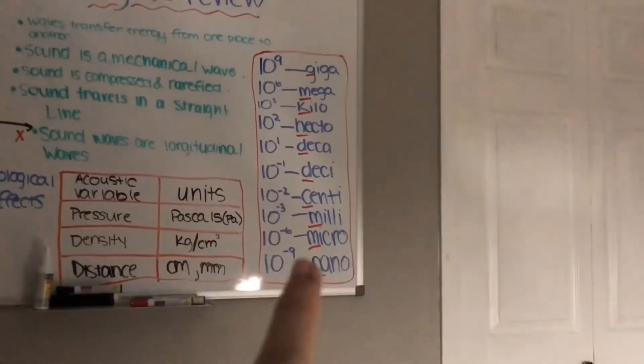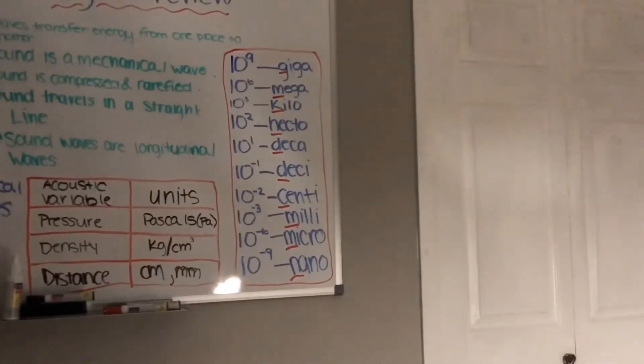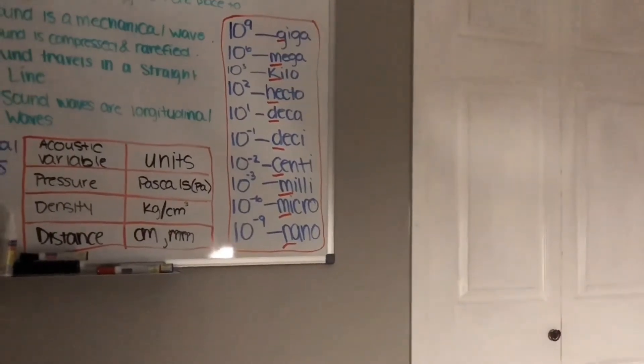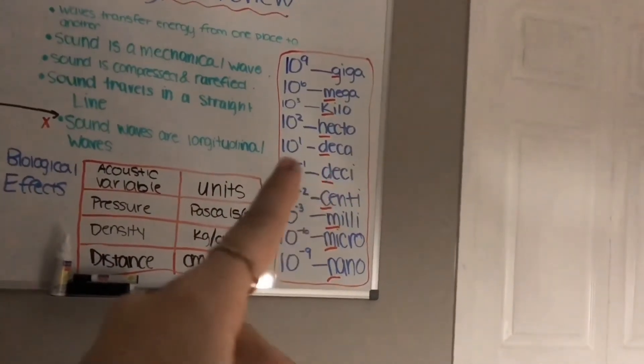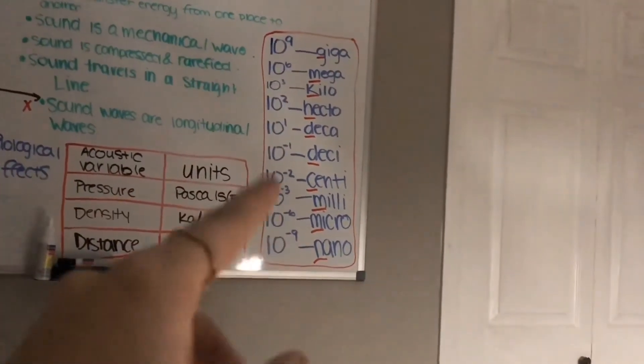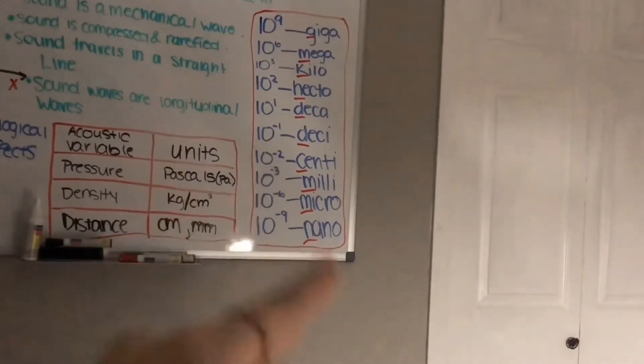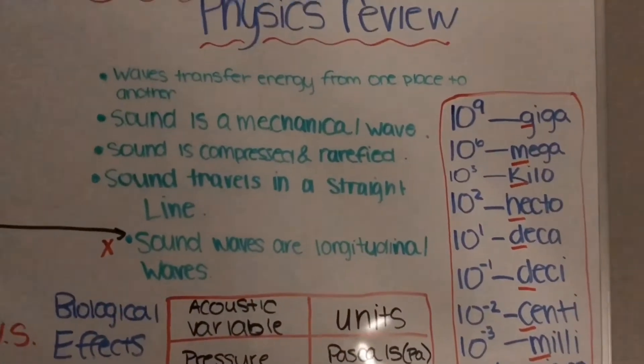What I want to memorize is the metric system. I highlighted all of the first letters because you can create a sentence that will make it easy for you to memorize. I want to keep in mind the exponents. DECA starts with 1, and then I just do 1, 2, 3, 6, 9, and then it's the opposite way. Negative 1, negative 2, negative 3, negative 6, and 9.